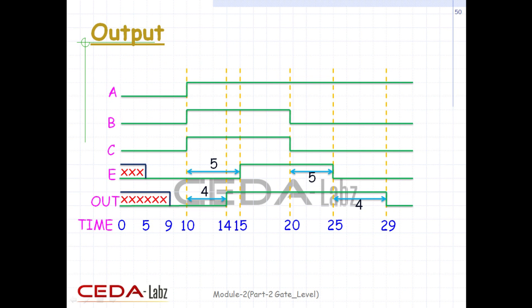The waveforms from simulation illustrate the effect of specifying delays on gates. The waveforms are not drawn to scale; however, simulation time at each transition is specified below the transition. The outputs e and out are initially unknown. At time 10, after a, b, and c all transition to 1, out transitions to 1 after a delay of 4 time units, and e changes to 1 after 5 time units. At time 20, b and c transition to 0 — e changes to 0 after 5 time units, and out transitions to 0 four time units after e changes.